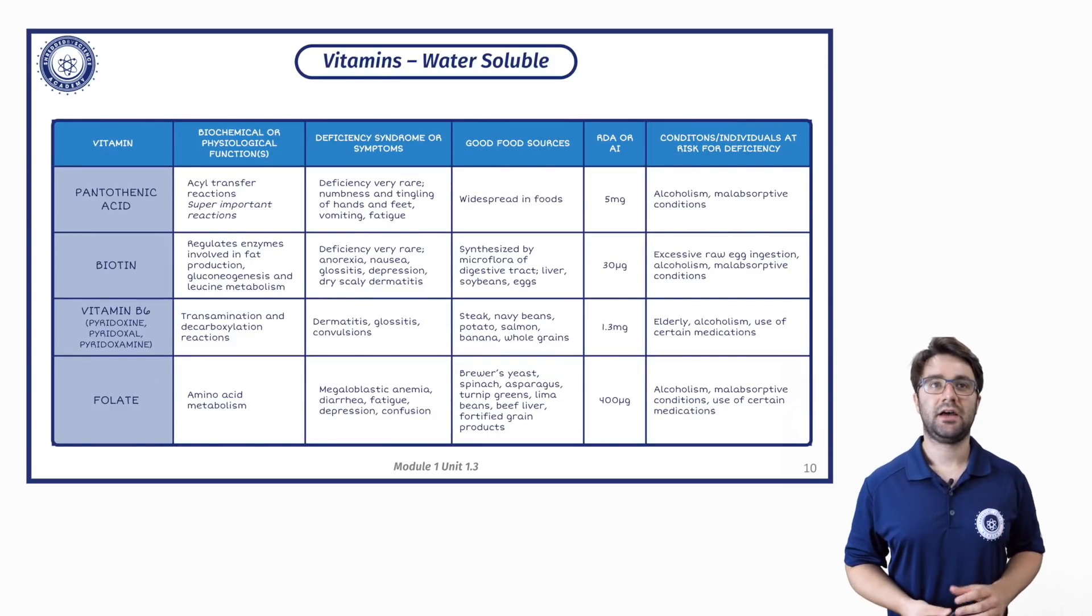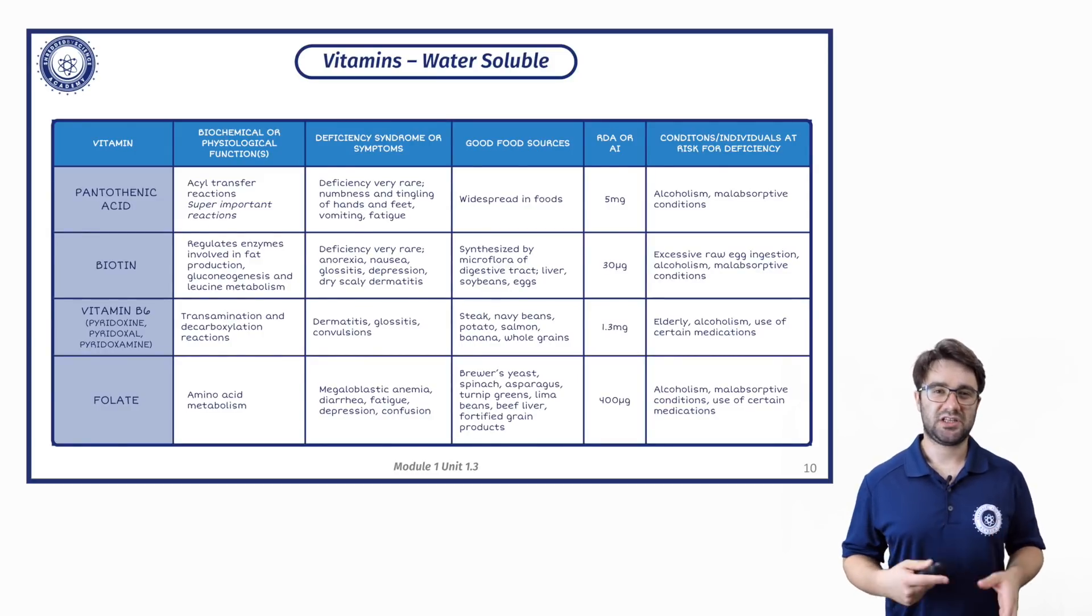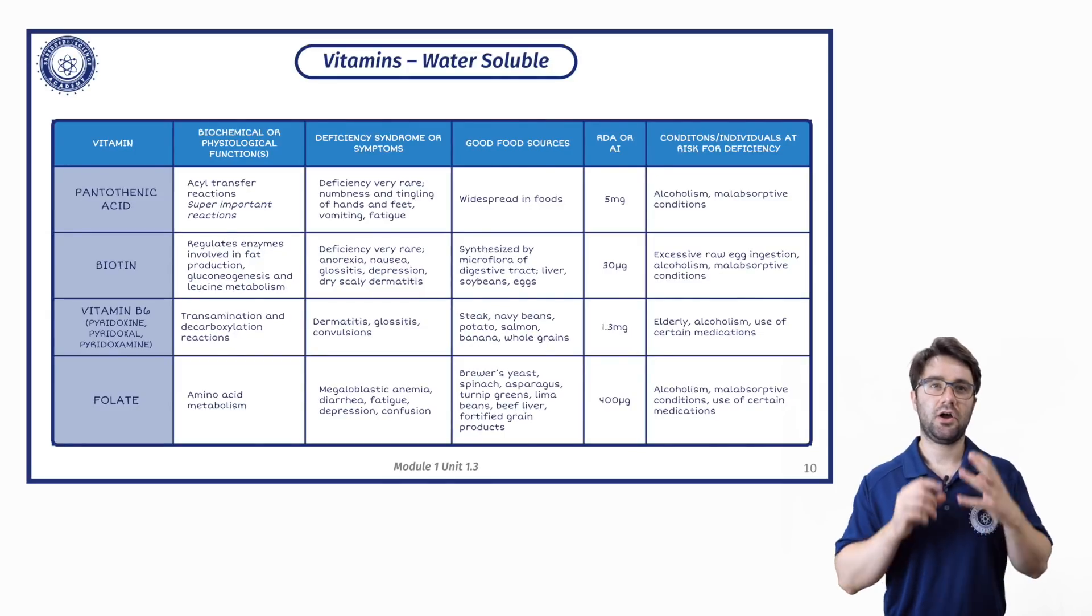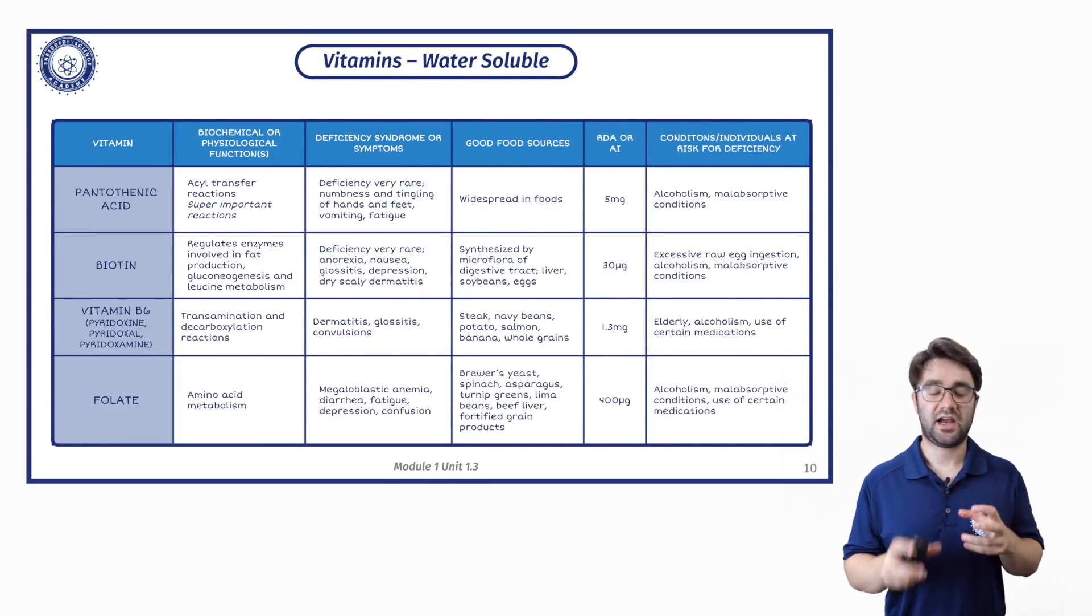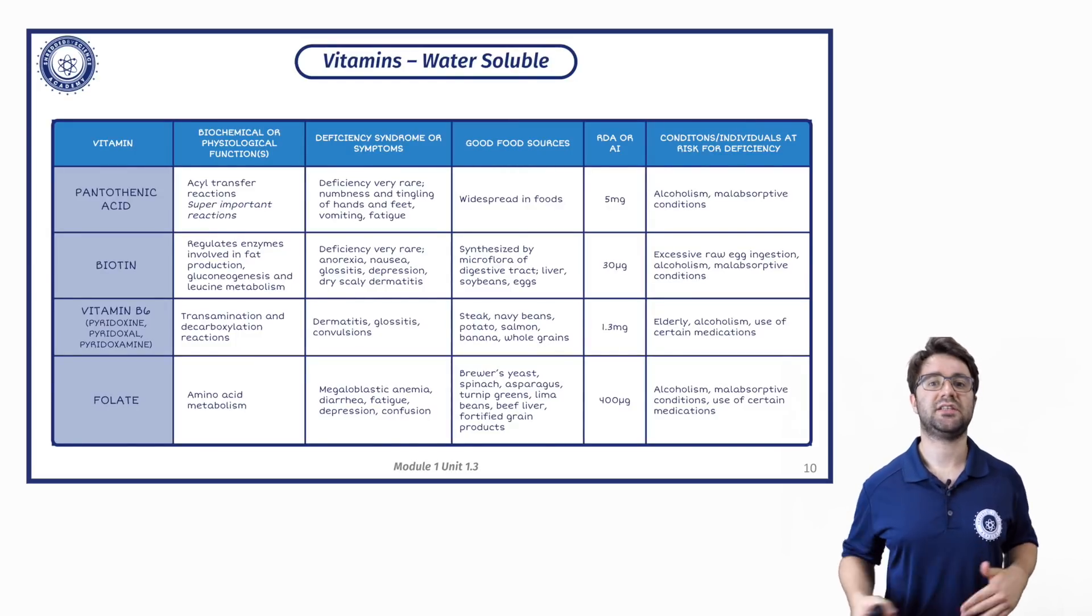Pantothenic acid. Basically, it's involved in these things called acyl transfer reactions. I'm not going to go into a huge amount of detail on those, but just bear in mind that these are super important reactions within the body. They're involved in so many different things. And as a result of that, pantothenic acid as a vitamin tends to be pretty widespread in foods.